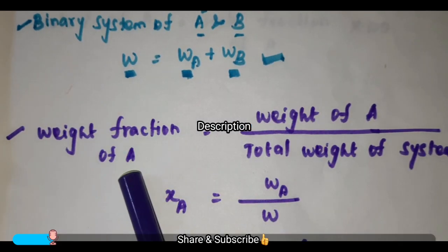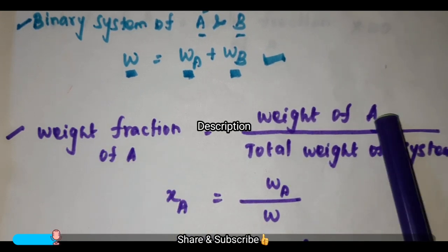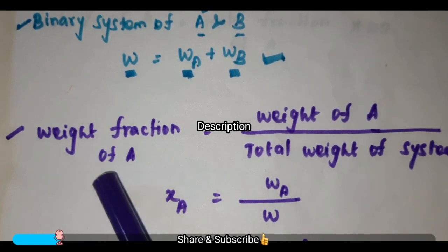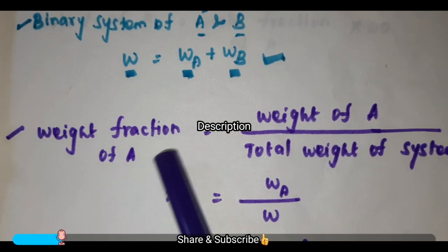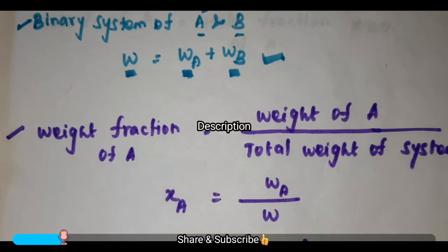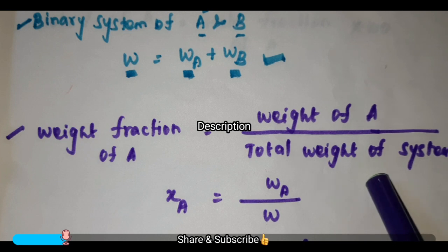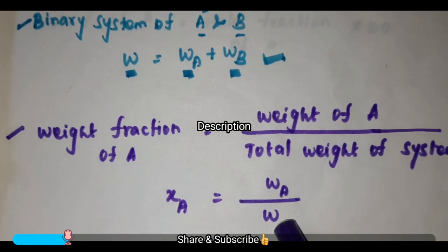The next term is weight fraction of A. Weight fraction of A is nothing but the ratio of the weight of a particular component present in the system to the total weight of the system. We can also express the composition of solution as a weight fraction. The formula is weight of A divided by total weight of the system, so X_A is equal to W_A divided by total weight of the system.